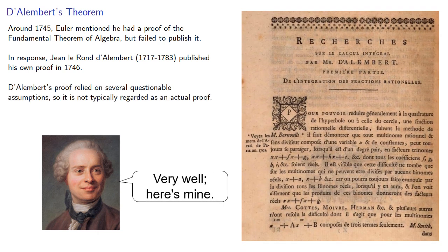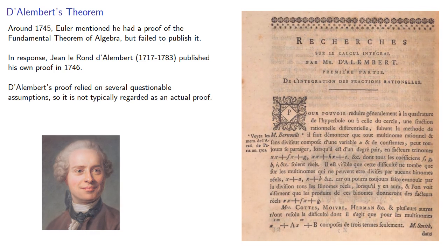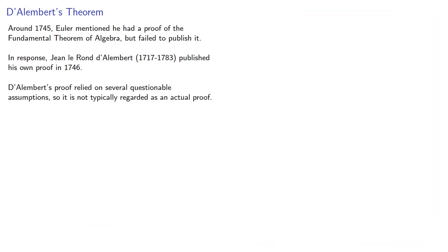D'Alembert's proof relied on several questionable assumptions so it is not typically regarded as an actual proof. However, it used some ideas that foreshadowed the modern proof using complex analysis.